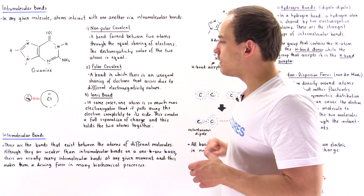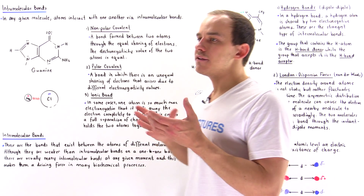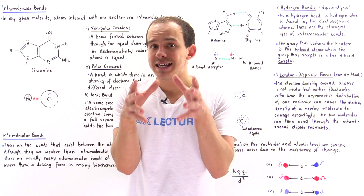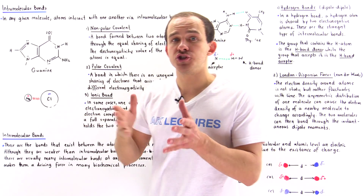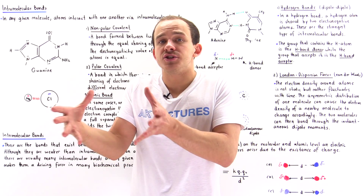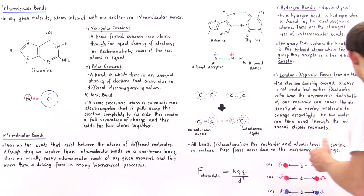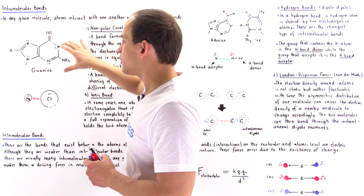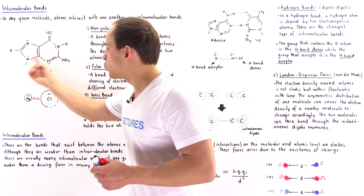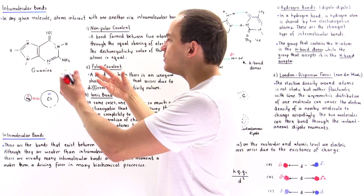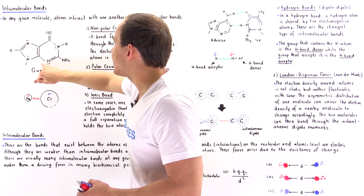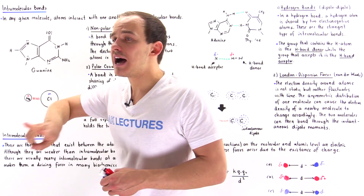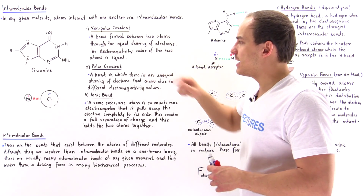The three types of intramolecular bonds are: non-polar covalent, polar covalent, and ionic bond. A covalent bond is a bond in which we have the sharing of electrons. If the sharing is equal between two atoms, we have a non-polar covalent bond. If the sharing is not equal — if it's slanted to one side — then we have a polar covalent bond. Considering the guanine molecule, which exists on DNA and RNA, we have four types of atoms: H, N, carbon, and oxygen. All these atoms are held together by non-polar covalent and polar covalent bonds.